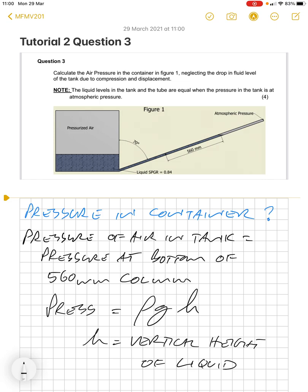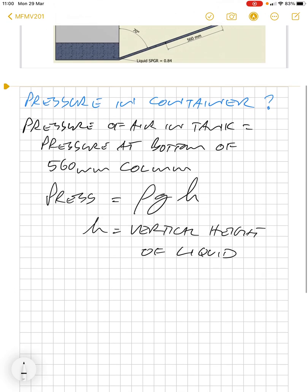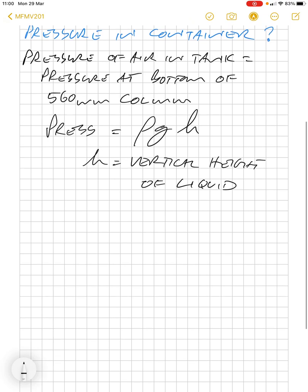We're given a distance of 560 millimeters, but that's along the pipe angle. ρ is 0.84, which is given to us. Times 1000 will give us 840 kilograms per cubic meter, the density of the fluid.